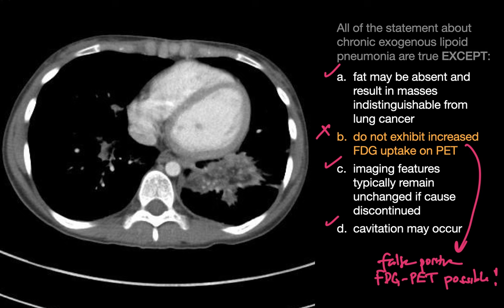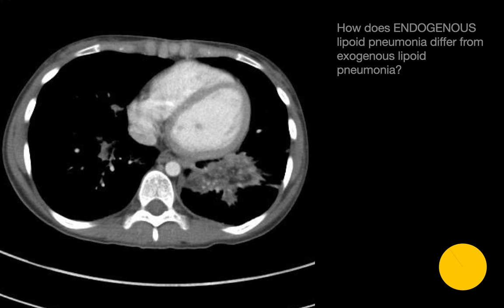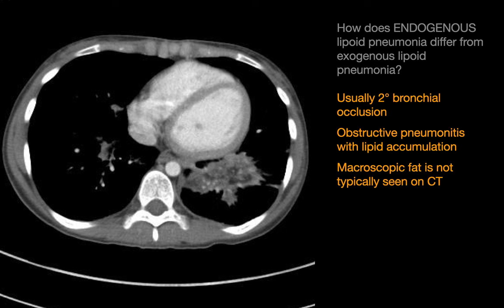Cases of chronic exogenous lipoid pneumonia are often attributed to the aspiration of mineral oil or other lipid-containing fluid into the peripheral lung. Most cases are asymptomatic and picked up incidentally on imaging. Endogenous lipoid pneumonia differs in that it occurs when damaged lung tissue releases fat and cholesterol in the setting of a more central bronchial occlusion, resulting in obstructive pneumonitis with lipid accumulation. On CT, macroscopic fat is not typically encountered in endogenous lipoid pneumonia.